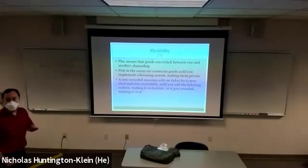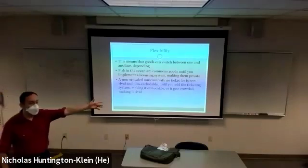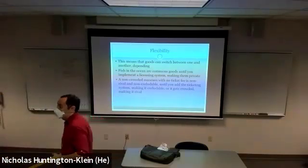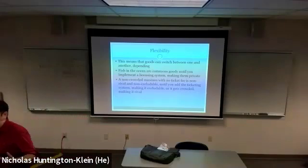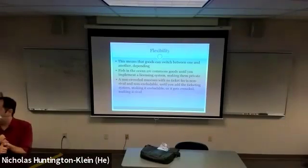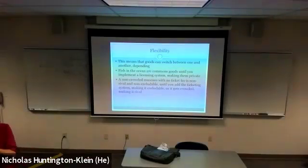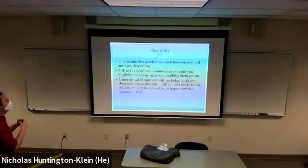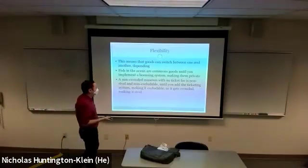Same thing with traffic. An open road is pretty non-rival and also non-excludable — you just drive on the road, nobody's there, you're not imposing costs on anybody. But once it starts to get crowded, the traffic becomes rival: every additional car slows everybody else down. And if you put a toll on it, then suddenly it becomes excludable. You can shift around what kind of good something is by shifting the circumstances.